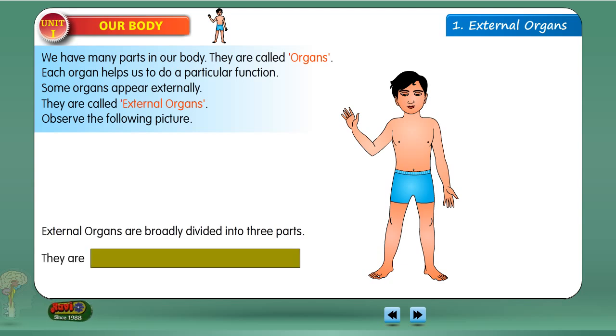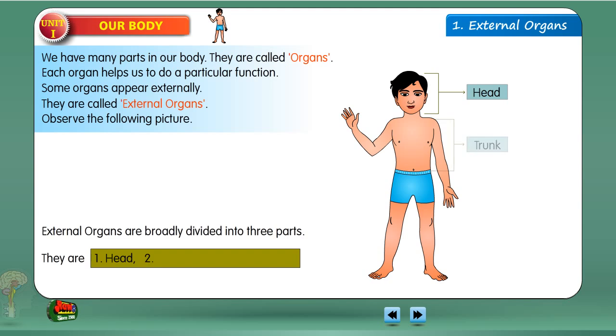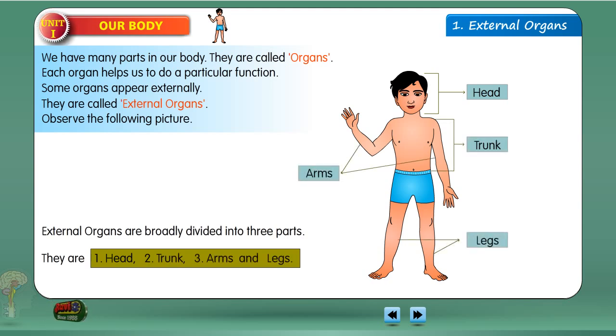The three parts are: 1. Head, 2. Trunk, 3. Arms and legs.